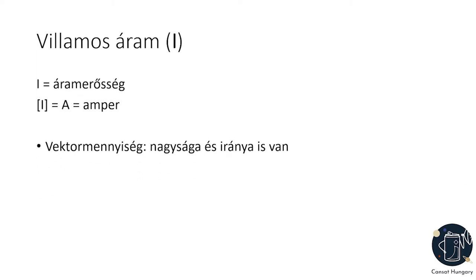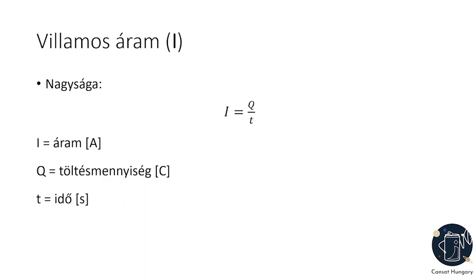Vezessünk be egy új fogalmat. A villamosáram nem más, mint a villamostöltések rendezett mozgása a fellépő erők hatására. Ezt az áramerősséggel jellemezzük, I-vel jelöljük, és a mértékegységét nagy A-val jelöljük és ampernek mondjuk. Az áram vektormennyiség, azaz iránya és nagysága is van. A villamosáram nagysága megegyezik az áramvezető teljes keresztmetszetén egységnyi idő alatt átáramló töltésmennyiséggel, azaz képlettel: I = Q / t.